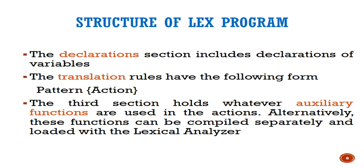The translation rules have the form: pattern followed by action. For example, if you have defined a pattern for identifiers, in the pattern you write 'identifier' and in the action part you write what to return as output. The third section holds auxiliary functions used in the actions — any functions called in the action part are defined here.